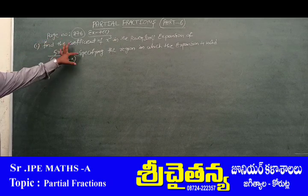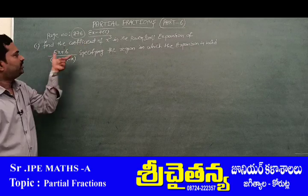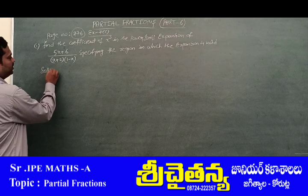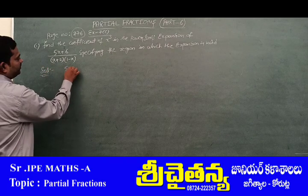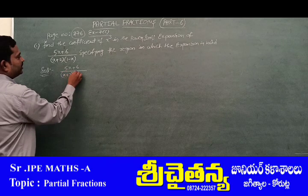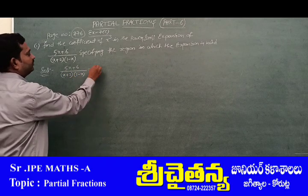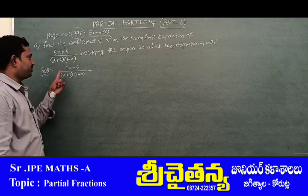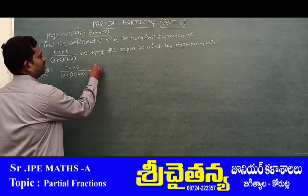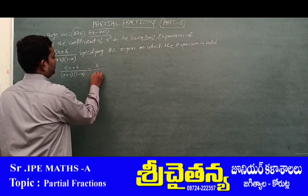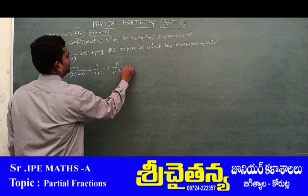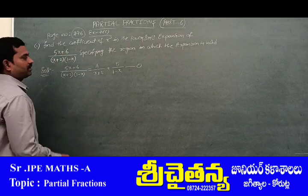Simply, we should find the coefficient of x³ in this expansion. For that, first we should write: (5x + 6) / ((x + 2)(1 - x)). By observation, this is a proper rational fraction. So using Rule 1, we write this as A/(x + 2) + B/(1 - x). Keep this as equation number 1.